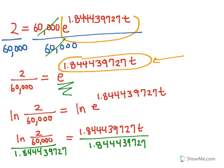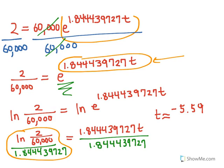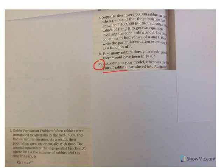Using a calculator, t is approximately equal to negative 5.59. We interpret that as about 5 and a half years before t equals 0, which is 1865. So 5 and a half years before 1865 would be sometime in 1859. According to our model, the first pair of rabbits was introduced to Australia around 1859, about 5 and a half years before 1865.